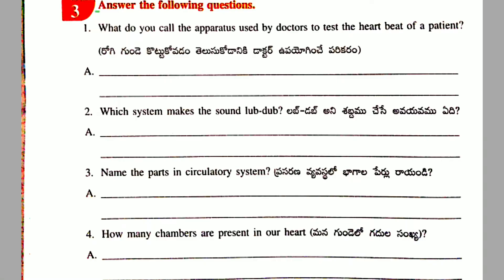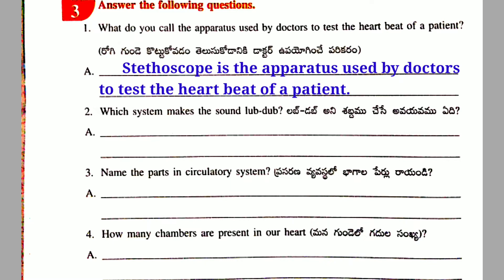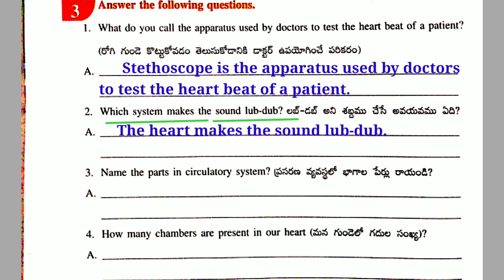Third activity: Answer the following questions. First question: What do you call the instrument used by doctors to test the heartbeat of a patient? Second question: Which system makes the sound lub-dub? Answer: The heart makes the sound lub-dub.